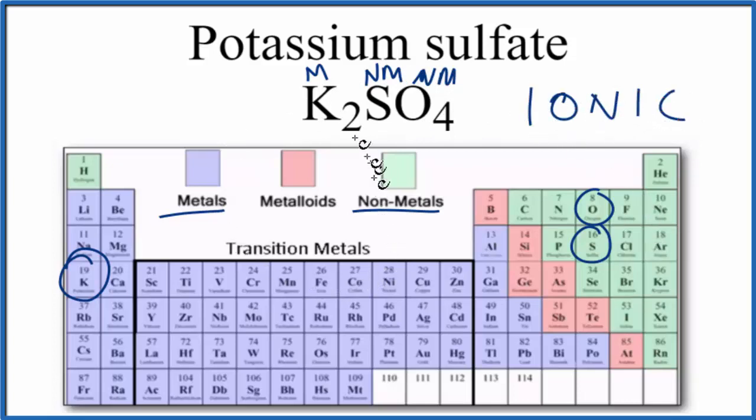So according to the periodic table, K2SO4 is ionic. We should probably look at the charge, though, because this is an ionic compound.